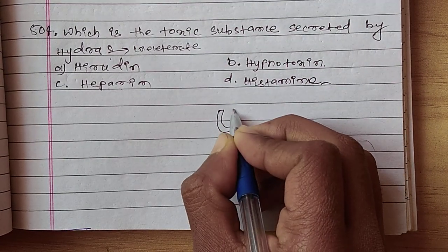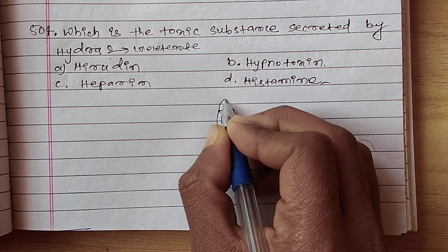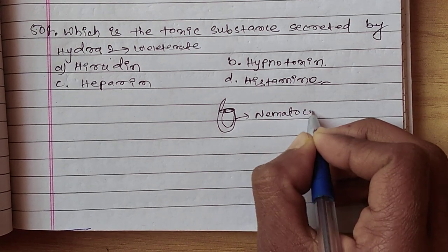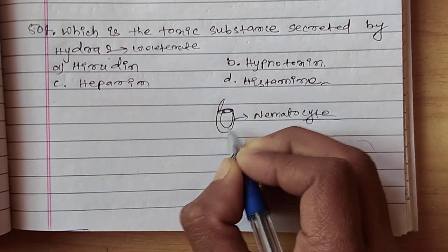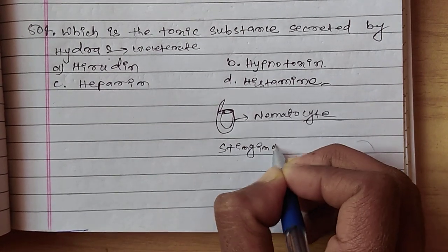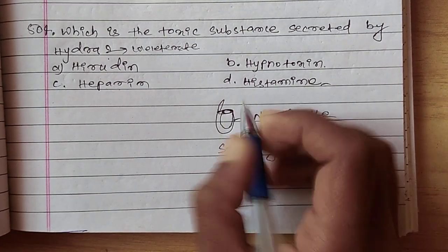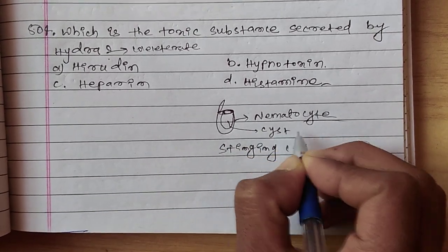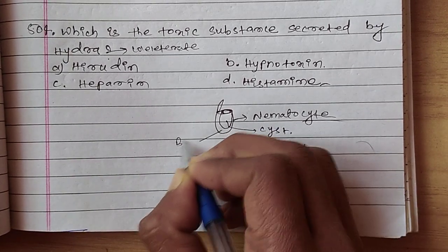Cnidarian ma ke huncha? Nematocyst, nematocyte vandemai. Hai yo ho, stinging cell. Stinging cell ma yo bhitra huncha cyst, nematocyst. Yo nematoblast cell.